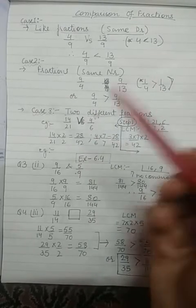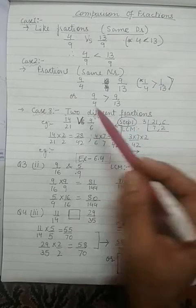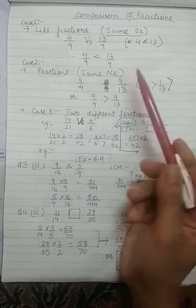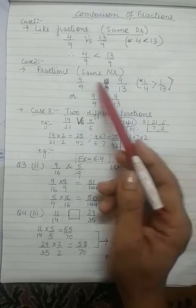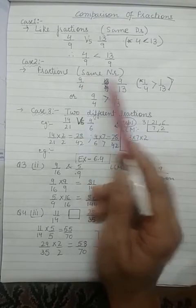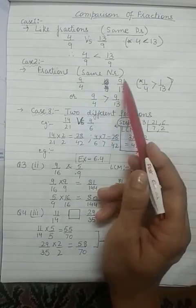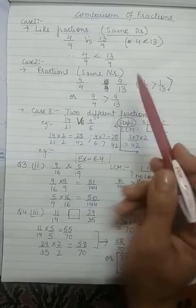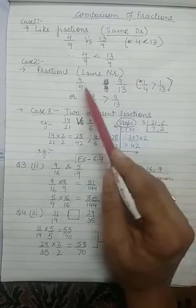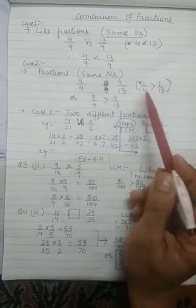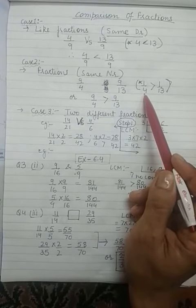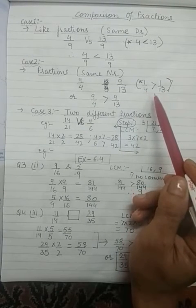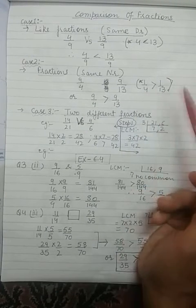This you were doing in previous classes also. Now come to fractions where the numerators are the same — the top numbers are the same. How to do it? In that case, we look only at the denominator. Here we have 4 and 13. Now you have to think in reverse.